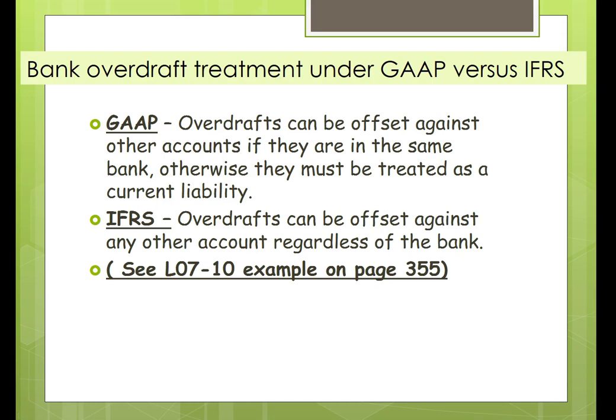Regarding bank overdrafts, GAAP and the international standard are different. Under GAAP, overdrafts can be offset against other accounts only if they're in the same bank; otherwise the overdraft is treated as a current liability. Under the international standard, you can offset any overdrafts against any account regardless of the bank. If you're using the SPICELIN book, you can see this on page 355 — they have an example.